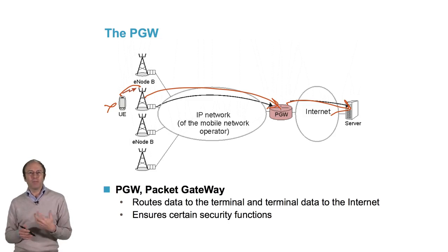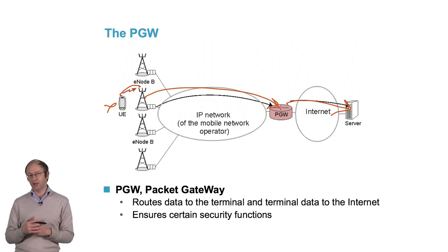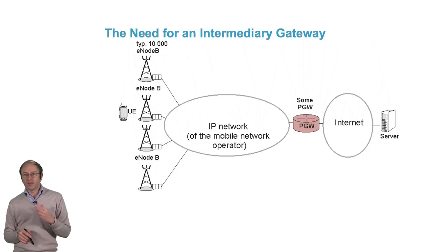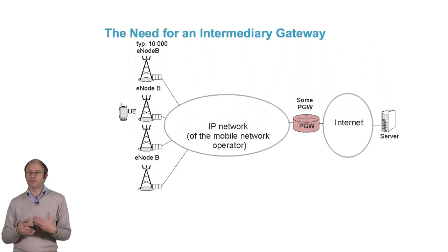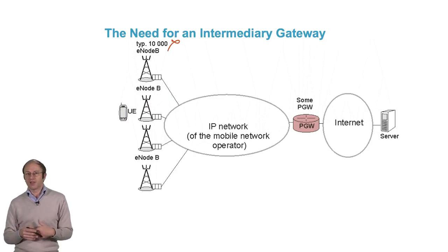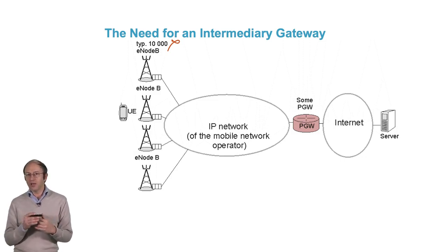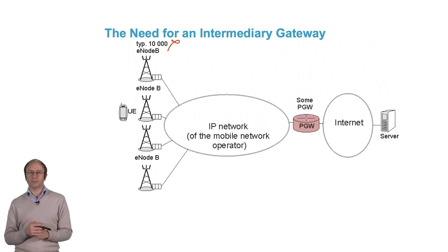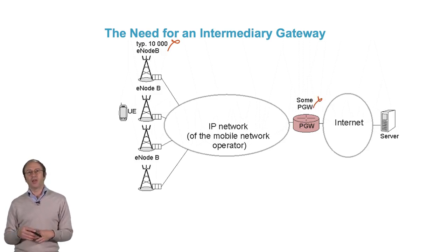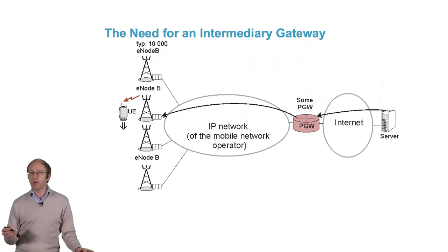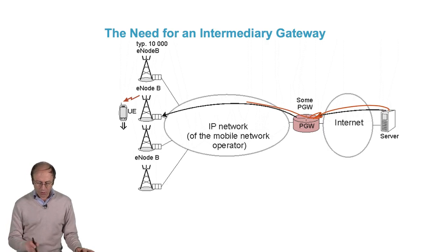However, P-Gateways are always limited in number. The typical number of eNBs for a French network is around 10,000. In certain cases, in dense areas, the coverage of an eNB is just several hundred meters around that eNB. On the other hand, there are just a few P-Gateways in a 4G network.